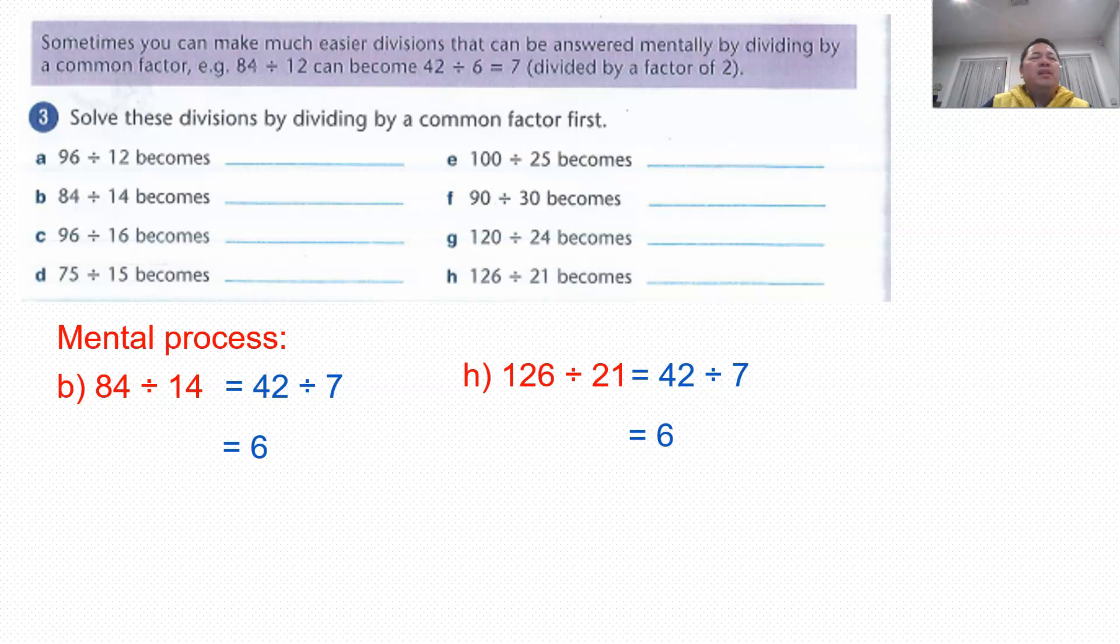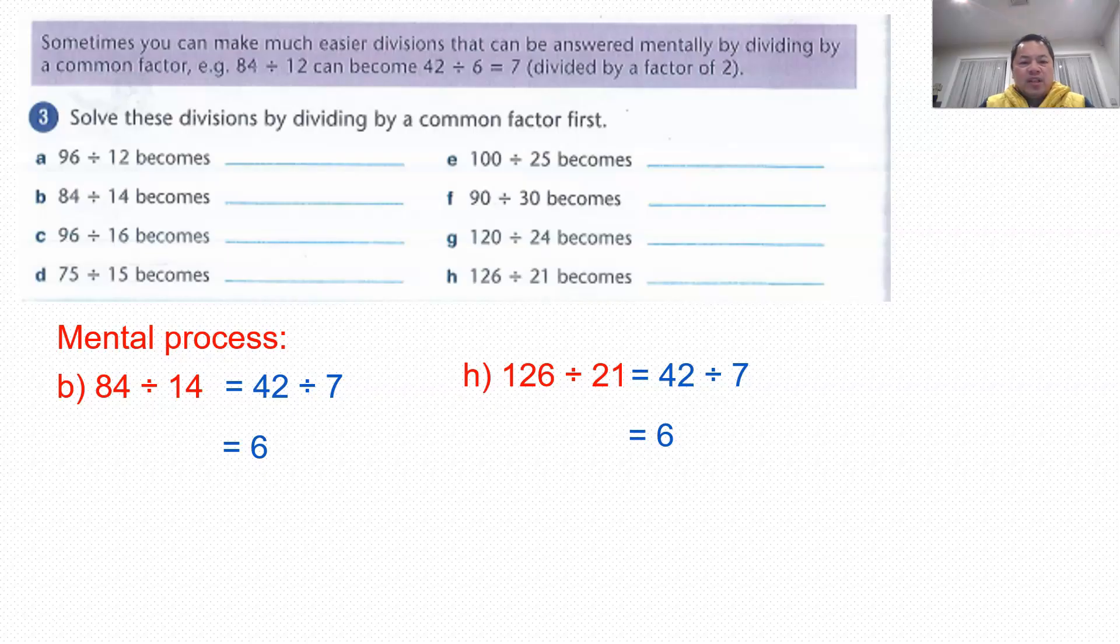So again, these are some of the mental strategies that you can deploy when you're dividing numbers with another number. So long as you see these two numbers have common factors, just divide those numbers with that common factor to simplify the process. Okay, that's the end of my presentation today. So do continue with the work given on MyAdOnline and also on the two pages. Drop me a note on direct message or teams if you need any help. All right. Thank you.